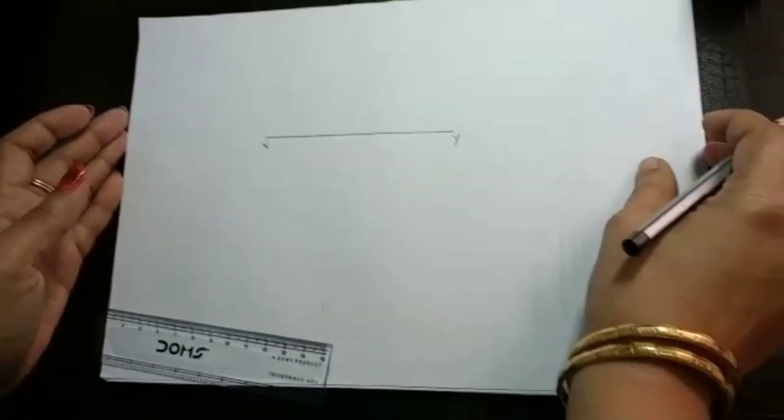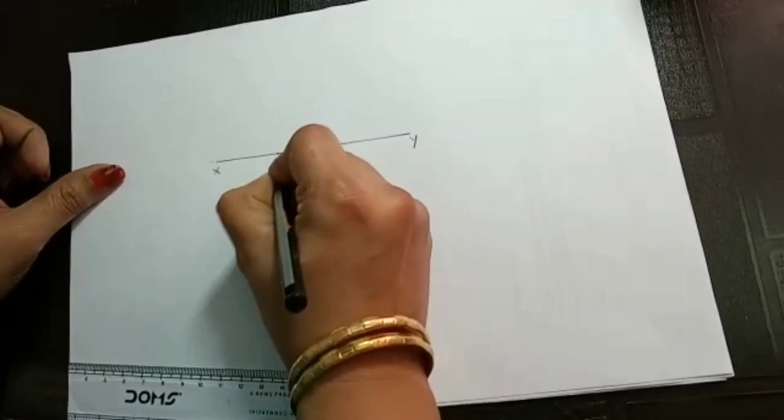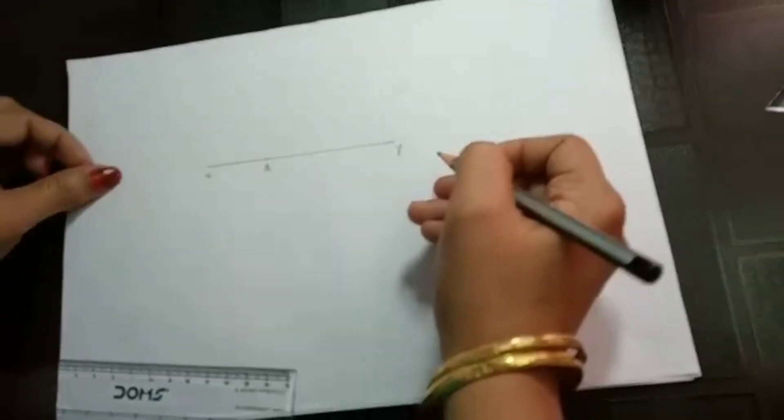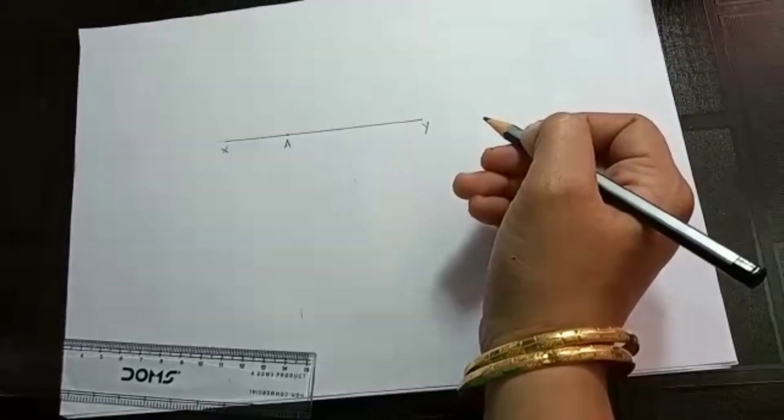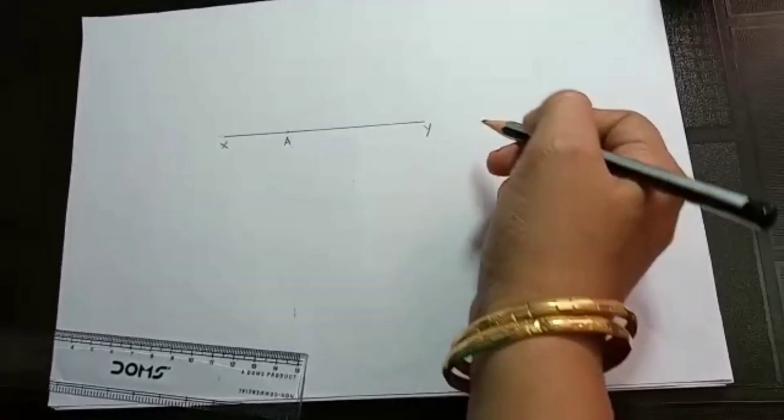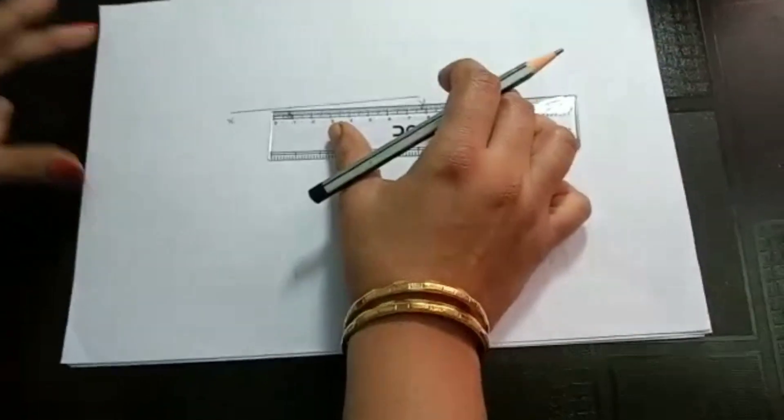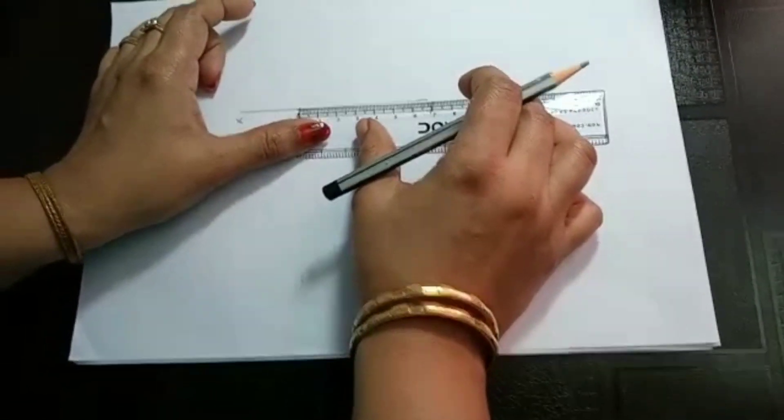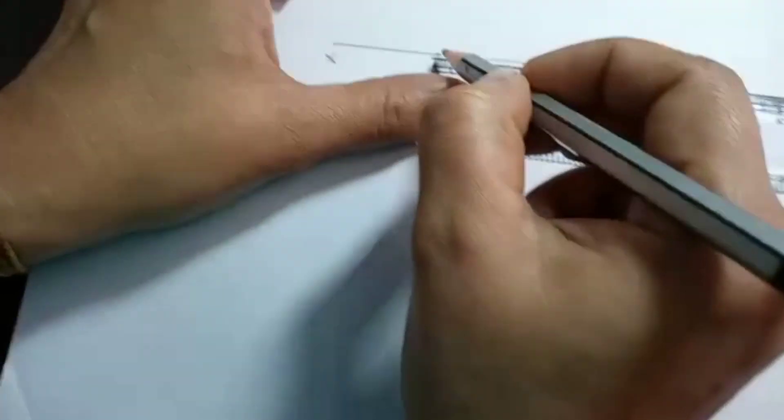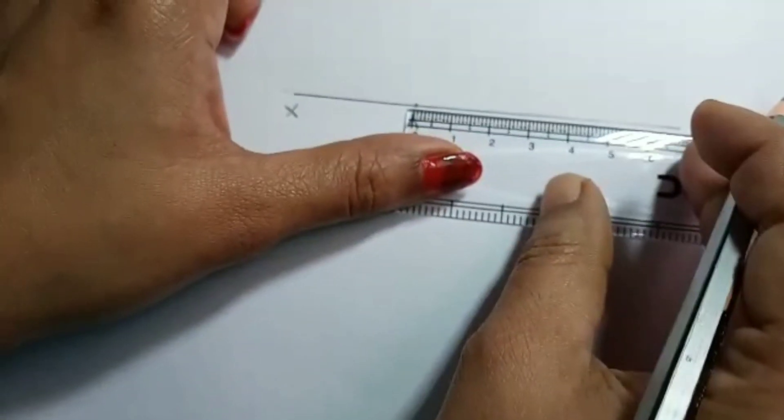So next just take any random point and mark A. And in the question it is given that AB is equal to 2.5 cm. So that is the length given in the question. So here this is 2.5 cm. Just measure that one. So here there is a point A, so from that we have to measure 2.5 cm.